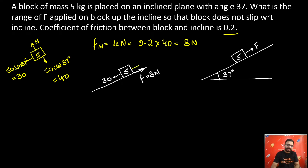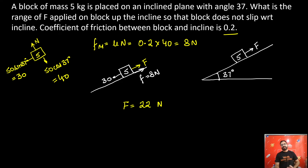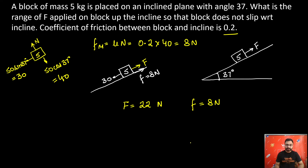The minimum external force required is 22 newtons. If you apply 22 newtons of external force, then the block is just at rest — with capital F of 22 newtons and friction of 8 newtons also acting upward. That is correct.